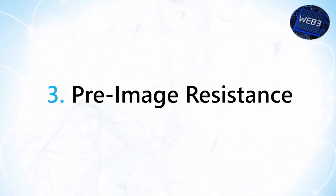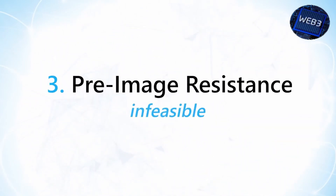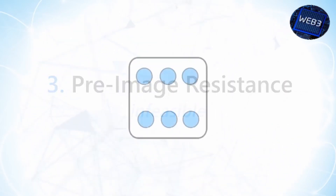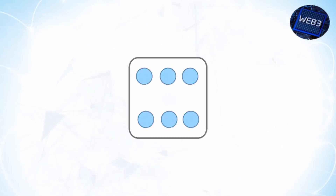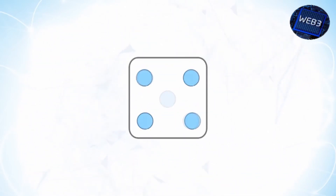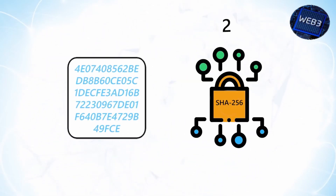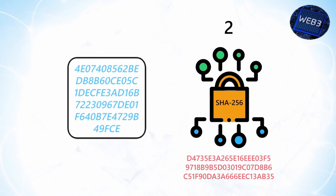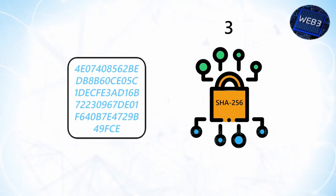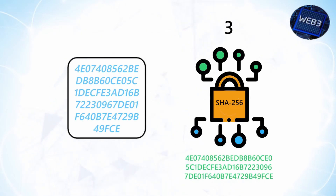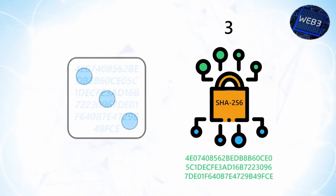Property 3 – Pre-image Resistance. Pre-image resistance states that it is infeasible to determine the input data based on the output hash. Notice the use of the word infeasible instead of impossible. For example, suppose you're rolling a die. Instead of getting a specific number between 1 and 6, you get a hash value that corresponds to a specific number. All you have to do is find out the hashes of every number from 1 to 6 and compare it with your result. Since hash functions are deterministic, the hash of a particular input will always be the same, so you can simply compare the hashes and find out the original input.